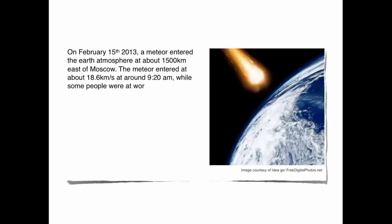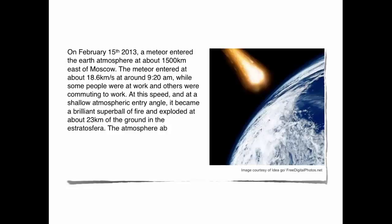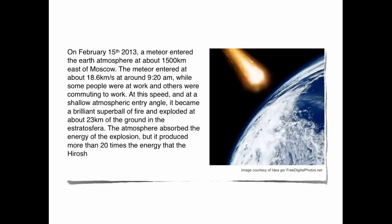On February 15, 2013, a meteor entered the Earth's atmosphere at about 1,500 km east of Moscow. The meteor entered at about 18.6 km per second at around 9:20 am, while some people were at work and others were commuting. At this speed and at a shallow atmospheric entry angle, it became a brilliant super ball of fire and exploded at about 23 km above the ground in the stratosphere. The atmosphere absorbed the energy of the explosion, but it produced more than 20 times the energy of the Hiroshima atomic bomb, and many residues reached the ground.